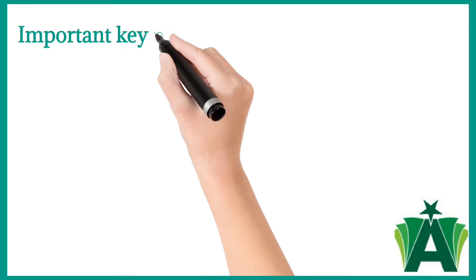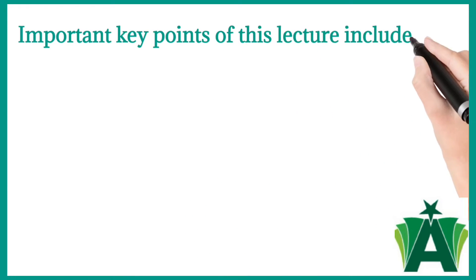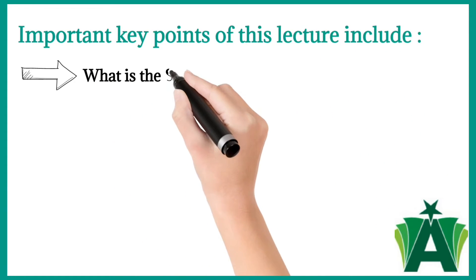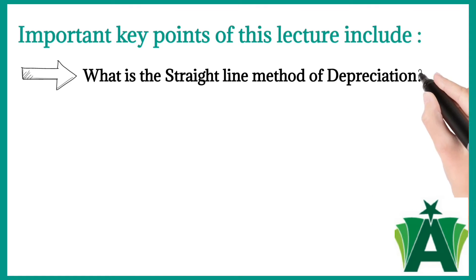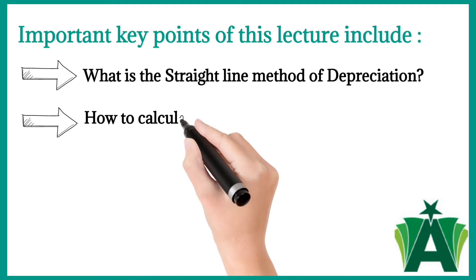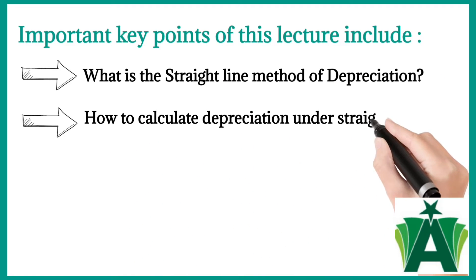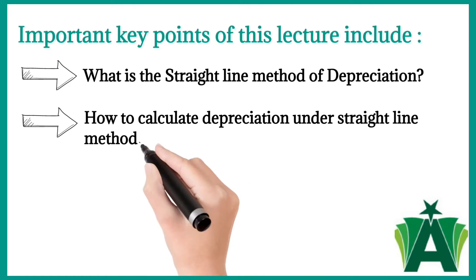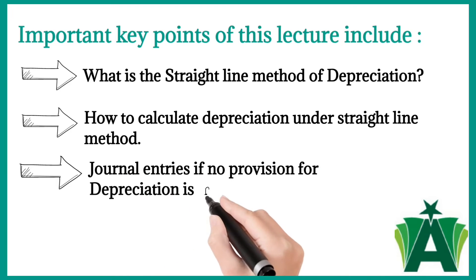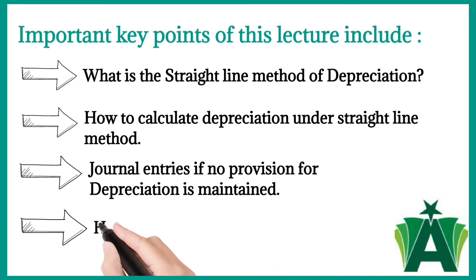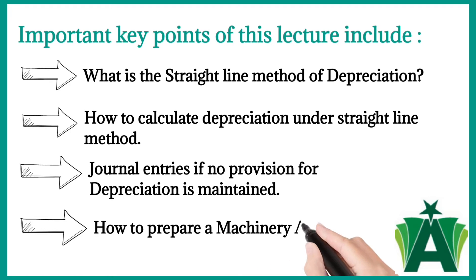Important key points of this lecture include: what is the straight line method of depreciation, how to calculate depreciation under the straight line method, journal entries if no provision for depreciation is maintained, and how to prepare a machinery account.